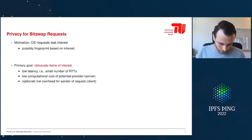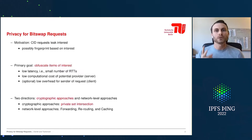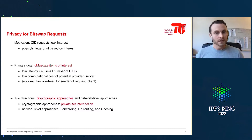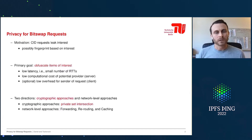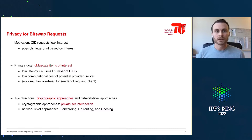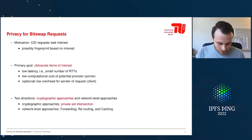To tackle this goal, we see two directions: a cryptographic approach and a network-level approach. Network-level approaches include forwarding, rerouting, and caching — all to obfuscate the original requester by using indirections. The quality of privacy from this kind of approach is something like plausible deniability: you can deny that you are the requester of a certain CID because it was or could have been rerouted.